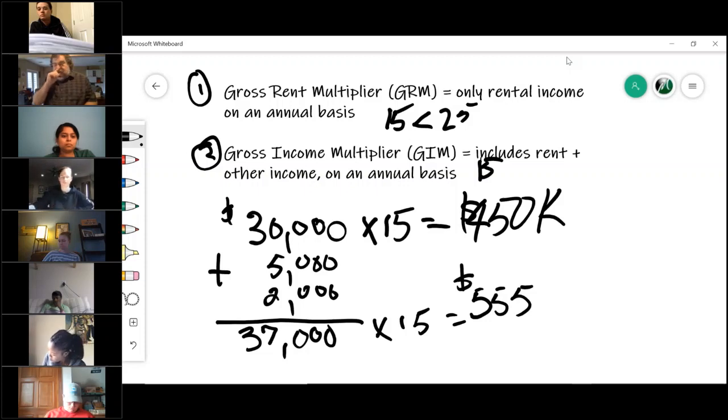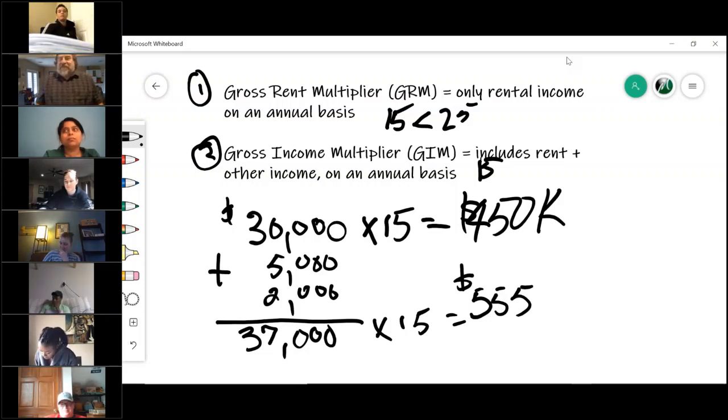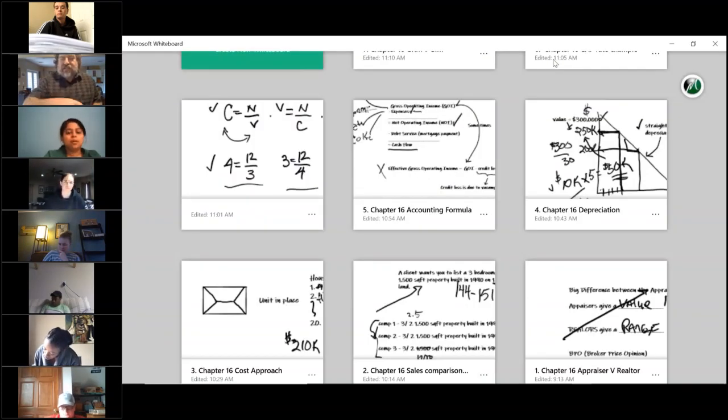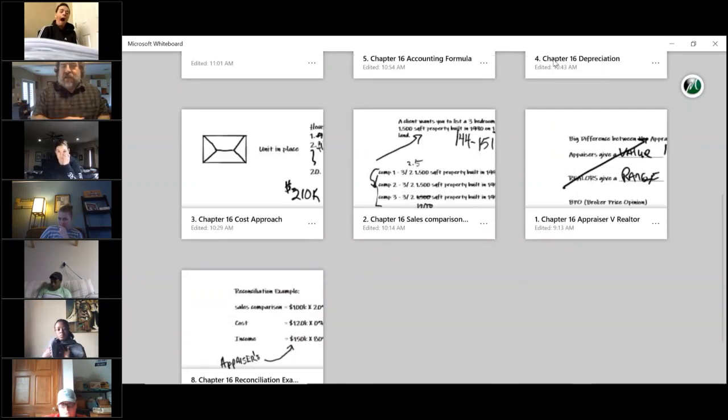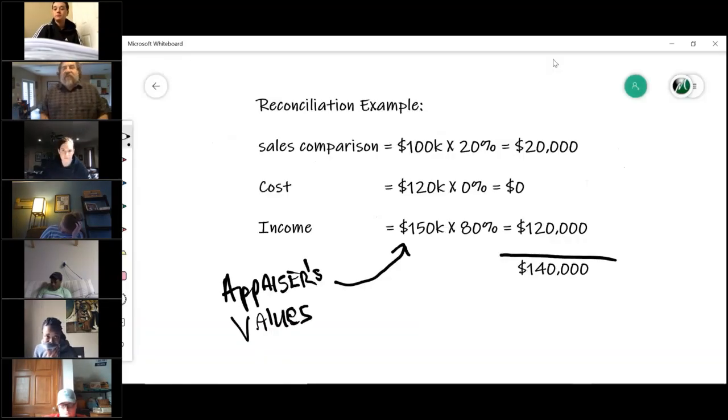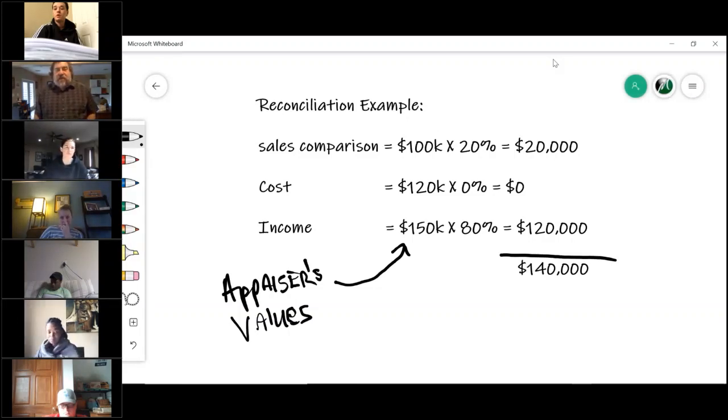So what you now have is a cap rate which uses NOI. You have a gross rental multiplier and a gross income multiplier. These are typically used for residential apartments, apartments. This is the income method. So what you now have seen is we technically have three different ways to do this property. This is through the rental method or the gross rent method, and we have the sales comparison approach and a cost approach.